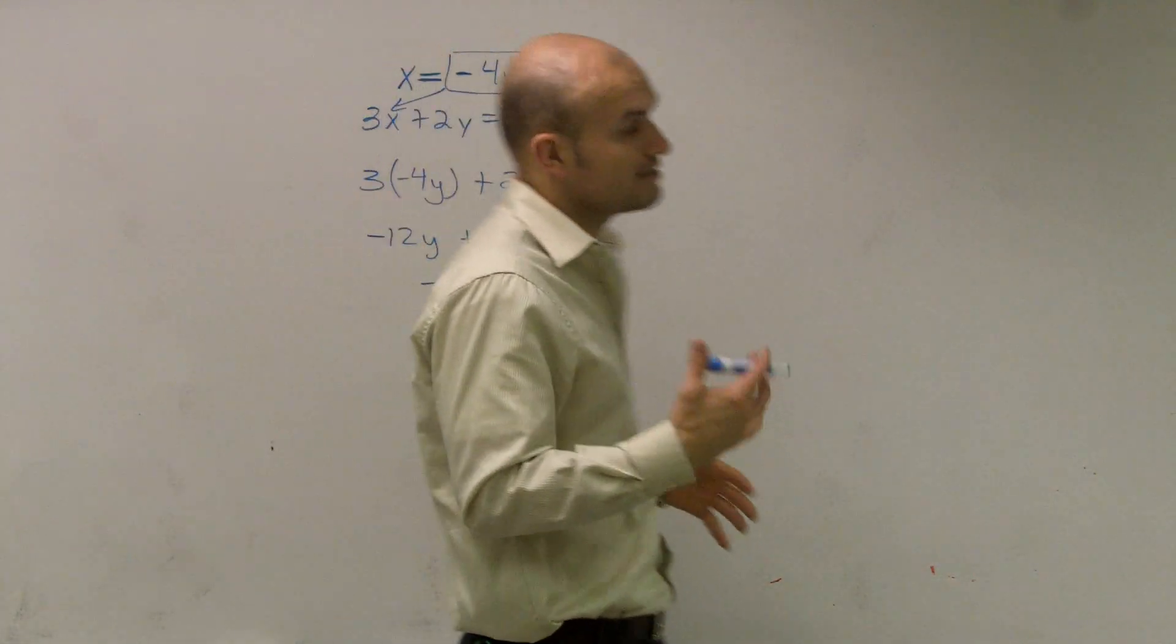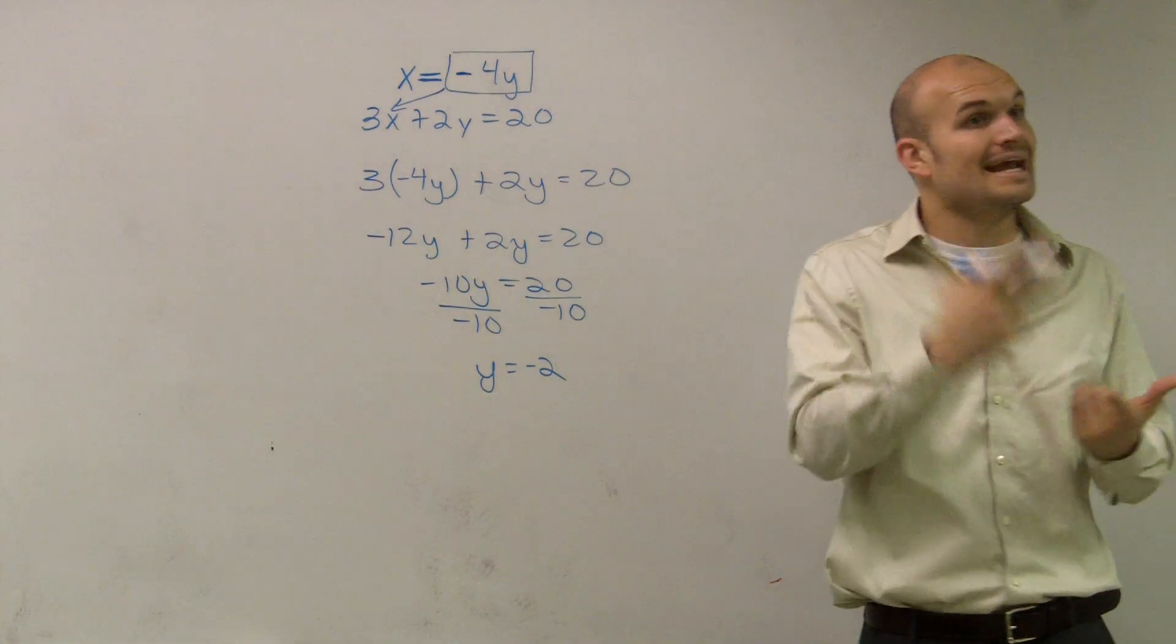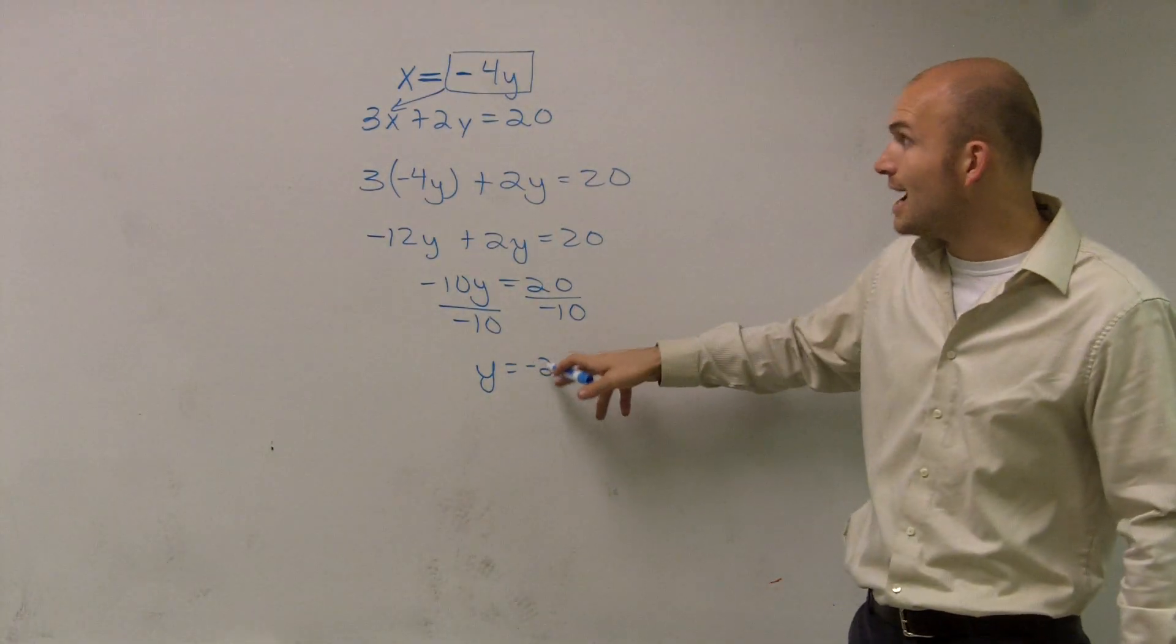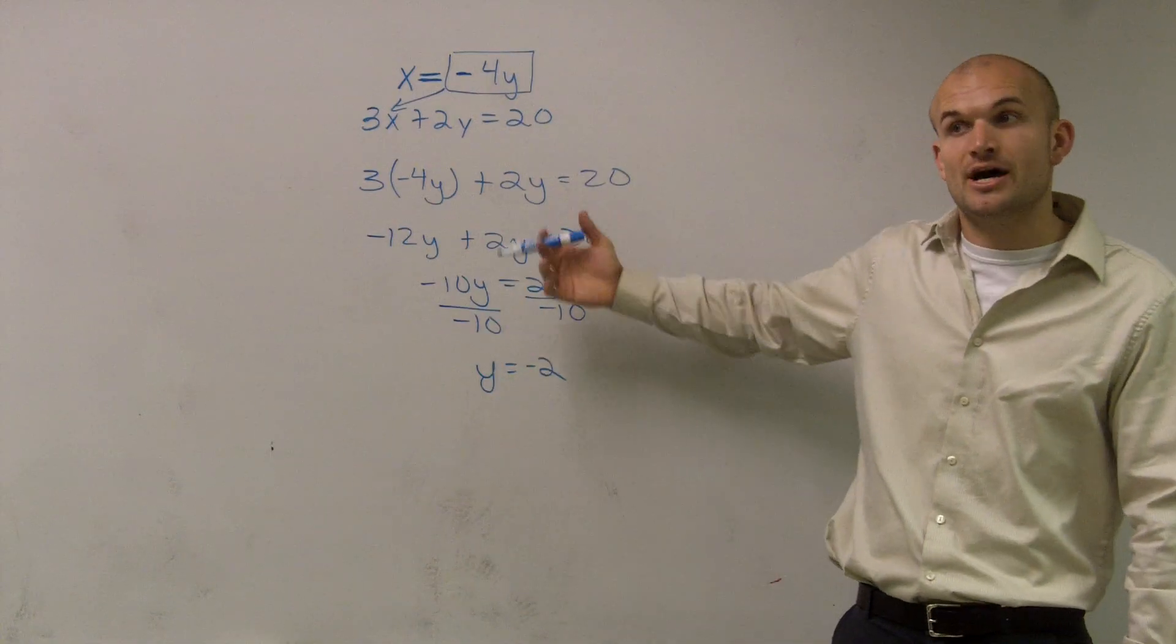But the problem says solve the system. That means I want to find the x and the y. So if I know that y equals negative 2, I can now plug in negative 2 for my value of y.